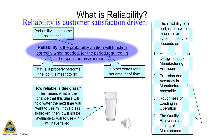Reliability is observable by number of returns and service call-outs from customers. In manufactured products, the reliability comes from its design, materials, manufacture and use in service.